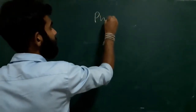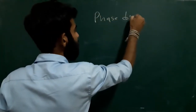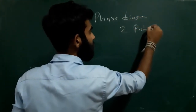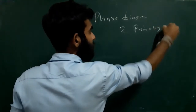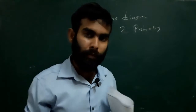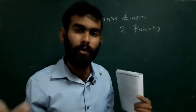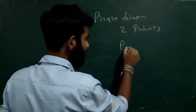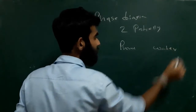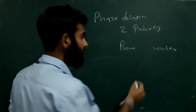The next experiment is the construction of a phase diagram for a system of two partially miscible liquids. Partially miscible means the two liquids will not mix fully, such as phenol and water. They are partially miscible.